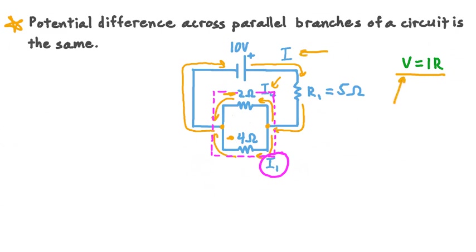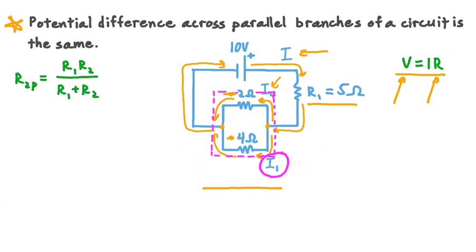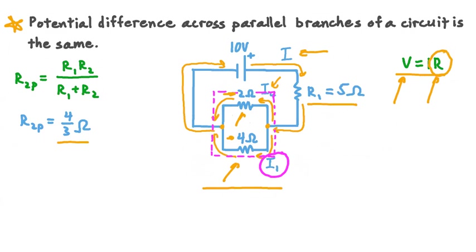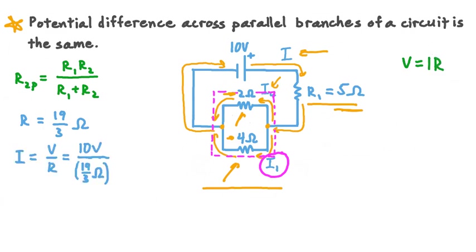To find the total resistance, we add the two parallel resistors — the 2 ohm and 4 ohm resistors — and then add that equivalent resistance to R sub 1. Using our rule for two parallel resistors, their equivalent resistance is their product divided by their sum, which we've already solved: it's 4/3 of an ohm. Adding that to R1 (5 ohms) in series gives a total resistance of 19/3 of an ohm. Dividing the overall voltage of 10 volts by 19/3 ohms gives us the total current: 30/19 of an ampere.